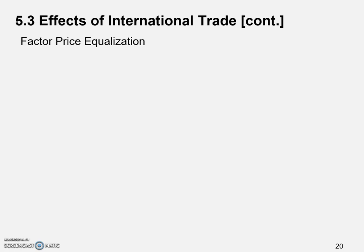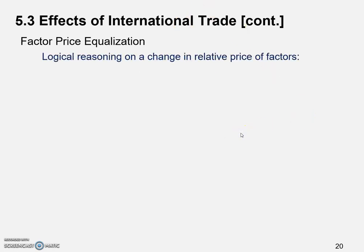Simply speaking, we are trying to say that the factor price tends to be equalized across countries because of international trade. What we're going to do here is just logical reasoning on the change in relative price of factors, because of trade. We're not going to use more math or even graphs — a very simple supply and demand analysis should be sufficient.